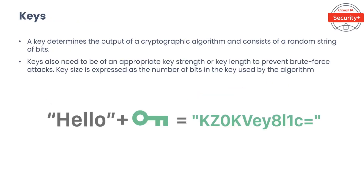The second principle is diffusion. If the plaintext is changed, no matter how minor the change, at least half of the ciphertext should also change, and vice versa. Like confusion, diffusion makes things more difficult for an attacker. Specifically, diffusion mitigates the capability to identify patterns that might help break the cipher.